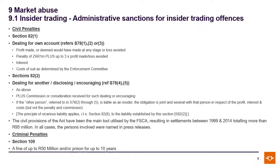You also have criminal penalties — those are separate from your civil penalties. Your criminal penalties in terms of section 109 can be up to 50 million rand and up to 10 years in prison. The difference between civil and criminal penalties is the balance of proof. In a civil case, the balance of proof is much less than in a criminal case. In a criminal case you need to prove beyond reasonable doubt — there must be no doubt in your mind that this person is guilty, because the sanctions are more severe. Whereas in a civil case, if you weigh up the probabilities, it is more probable than not that this person is guilty. So civil and criminal have different balances of proof.